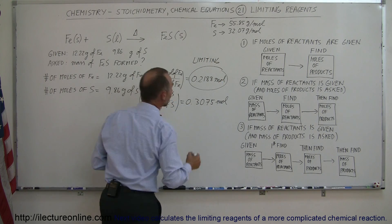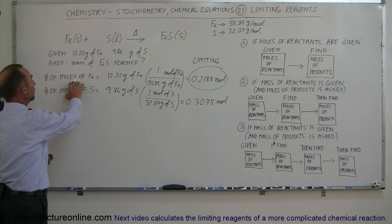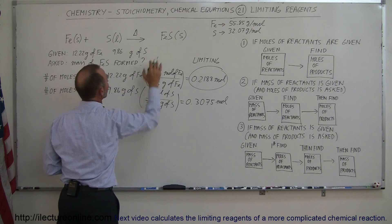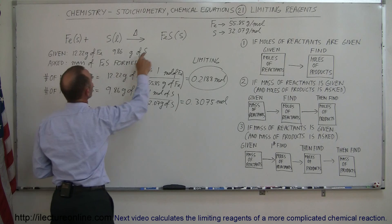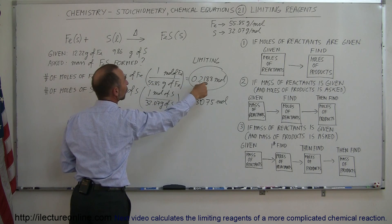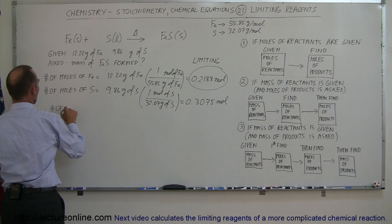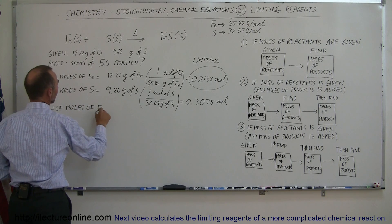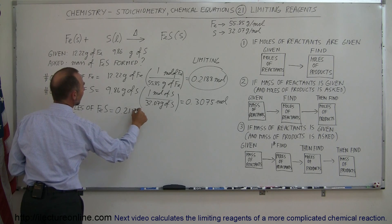Now that we have the number of moles of iron, we need to convert that to the number of moles of the end product, iron sulfide. Since there is a one-to-one relationship — for every one mole of iron there is one mole of iron sulfide — the number of moles of iron sulfide is equal to the same number: 0.2188 moles.